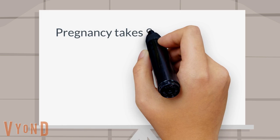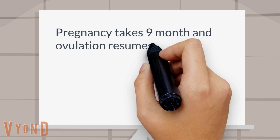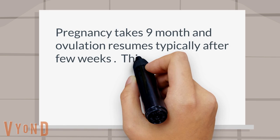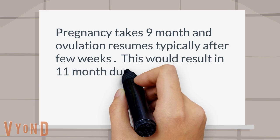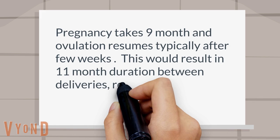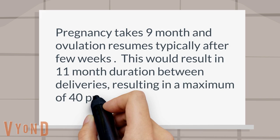Pregnancy takes 9 months and ovulation resumes typically after a few weeks. This would result in an 11-month duration between deliveries, resulting in a maximum of 40 pregnancies.